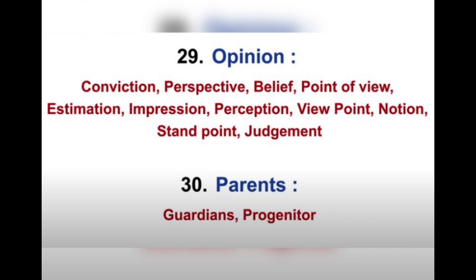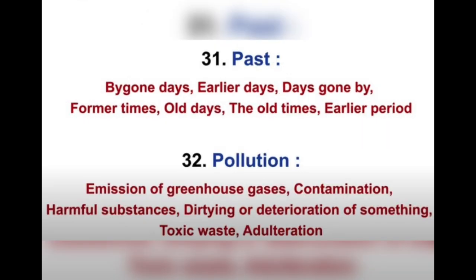For 'opinion' you can use: conviction, perspective, belief, point of view, estimation, impression, perception, viewpoint, notion, standpoint, and judgment. For 'parents' you can use: guardian, progenitor. Number thirty-one is 'past.' For past you can write: bygone days, earlier days, days gone by, former times, old days, and earlier period.